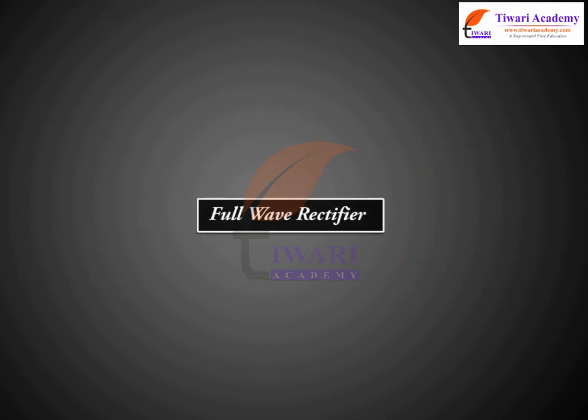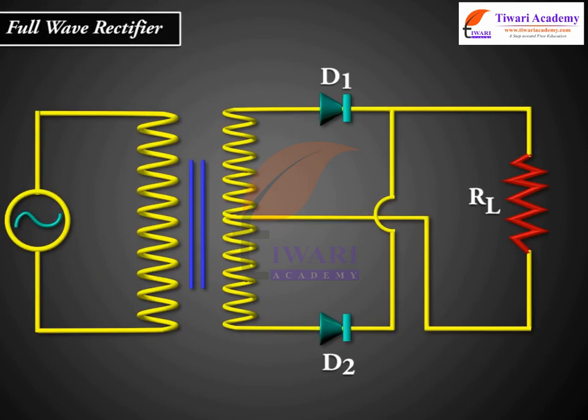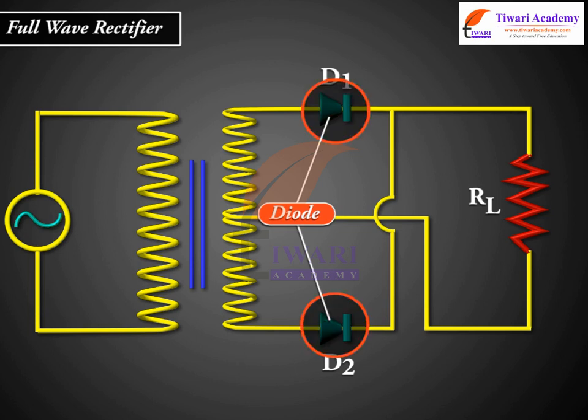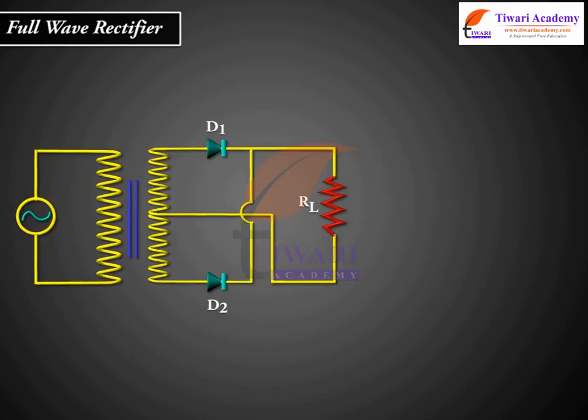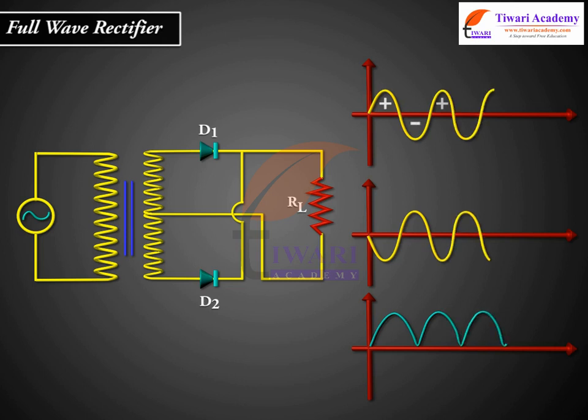Full-wave rectifier. The circuit using two diodes shown in the figure gives output rectified voltage corresponding to both the positive as well as negative half of the AC cycle.